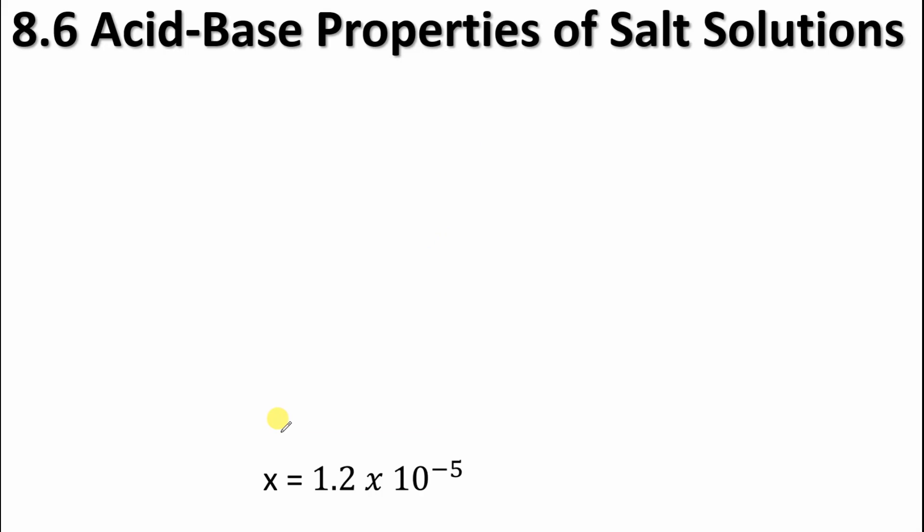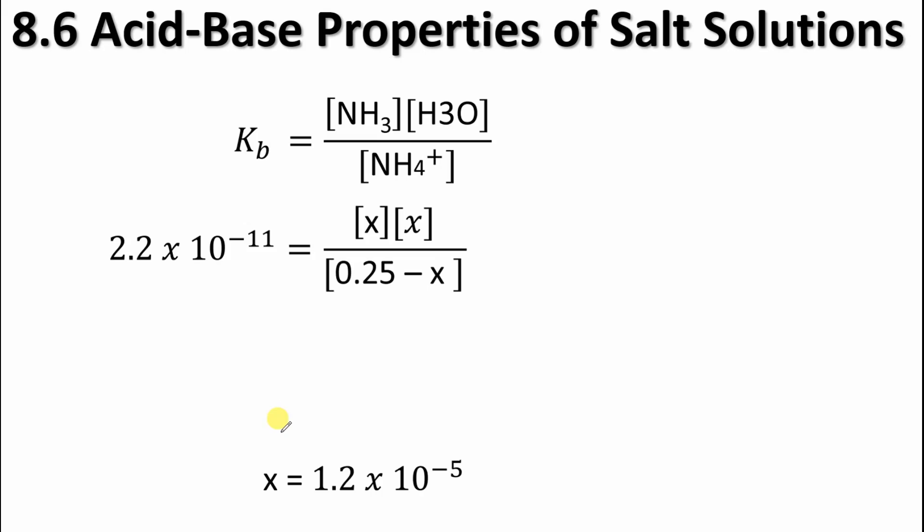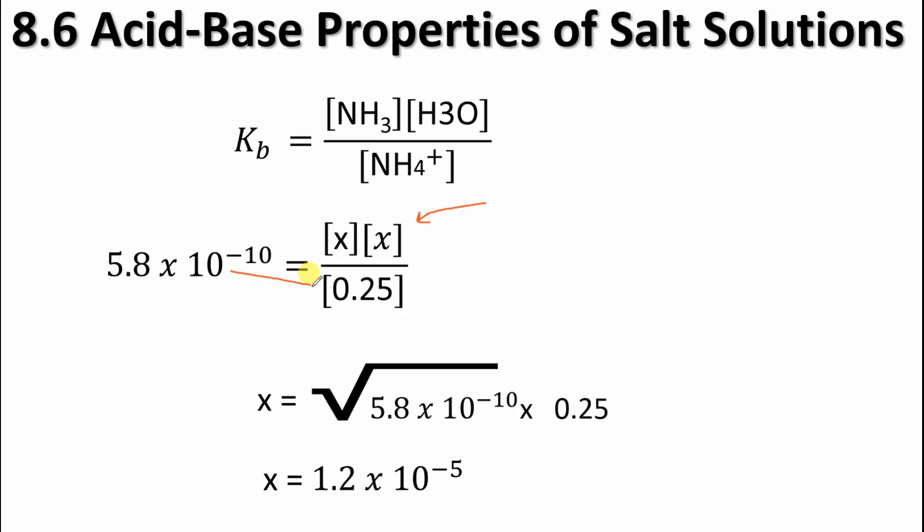We've got our expression. We're going to substitute our numbers in. You can do the 100 rule to figure out if we can ignore this X here. And good news is we can. So, we can proceed by doing that. And then it's just going to be a matter of rearranging. So, we're going to have an X squared up top here. And we're going to have 5.8 times 10 to the minus 10 multiplied by 0.25. And then, of course, we'll square root that. And we get our answer at the bottom here of 1.2 times 10 to the minus 5.